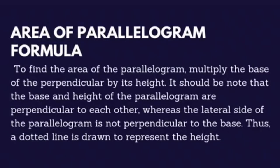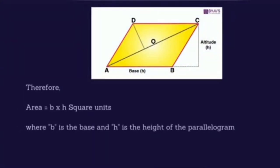Hi. Nama saya Afzal Serifina Uji Jamian. Nombor matric saya adalah 09BEP20F1040. Area of parallelogram formula. To find the area of the parallelogram, multiply the base of the perpendicular by its height. It should be noted that the base and height of the parallelogram are perpendicular to each other, whereas the lateral side of the parallelogram is not perpendicular to the base. Thus, a dotted line is drawn to represent the height. Therefore, area equals B multiplied by H square units, where B is the base and H is the height of the parallelogram.